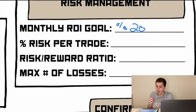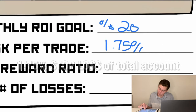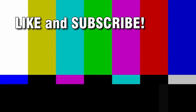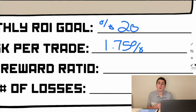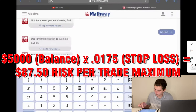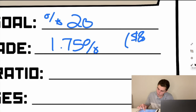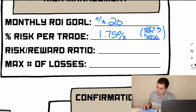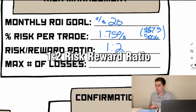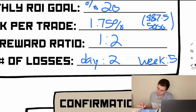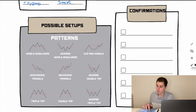For risk management, I keep my risk per trade at 1.75% of my total account size. On a $5,000 account that means I won't risk more than $87.50 per trade — $5,000 times 0.0175. My risk-reward ratio is no lower than 1:2. The maximum number of losses I'll take in a day is two, and in a week is five. These limits help a lot with the psychology of trading, though you'll have to figure out your own thresholds.